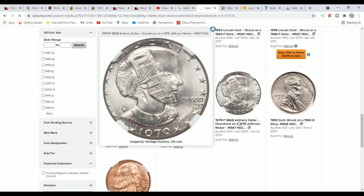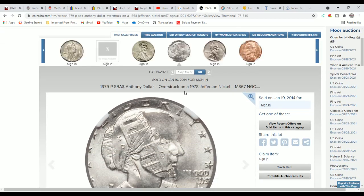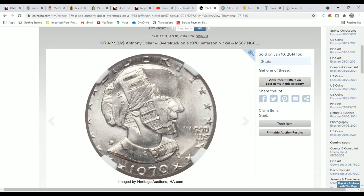Here's an interesting one here. Looks like it was overstruck. I see it says the Susan B. Anthony dollar overstruck on a '78 Jefferson nickel. This is what it would look like.